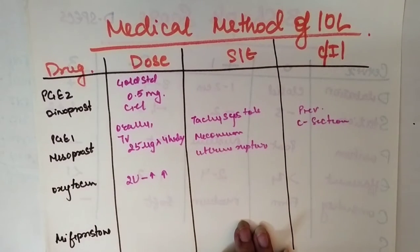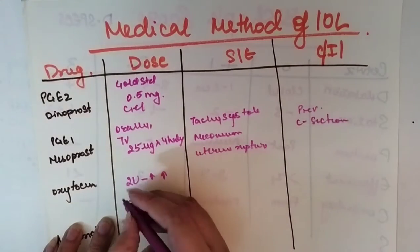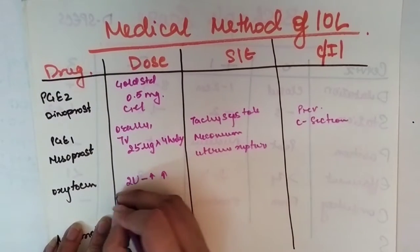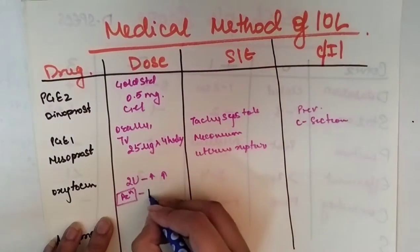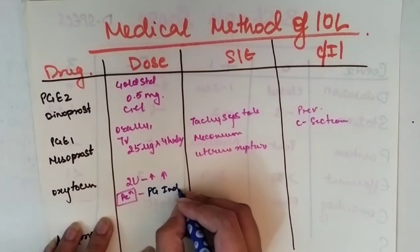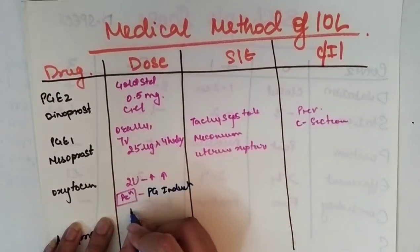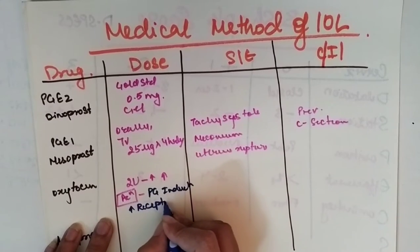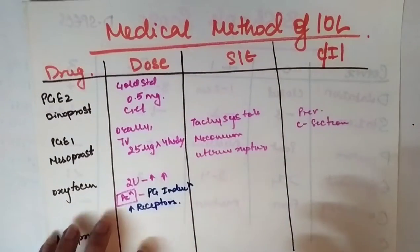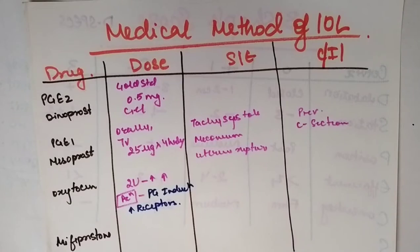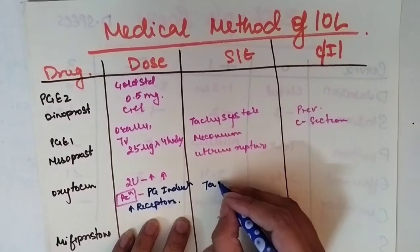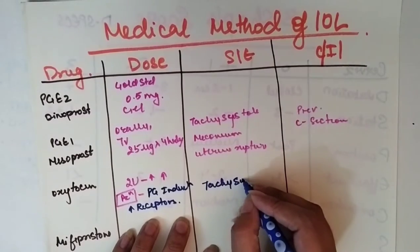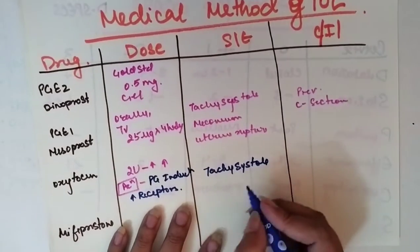It basically causes prostaglandin induction and it increases receptors for prostaglandins. Side effect for oxytocin is it can cause tachysystole same as misoprostol and FHR changes.